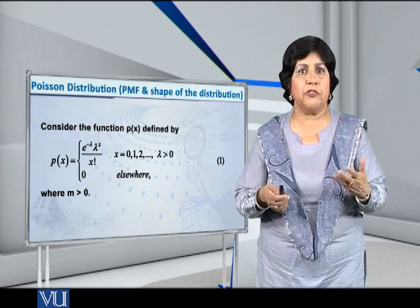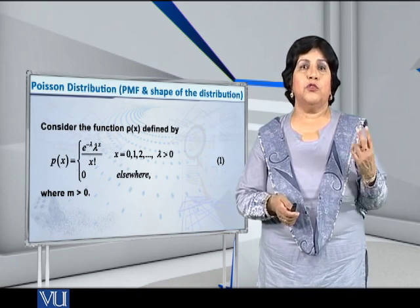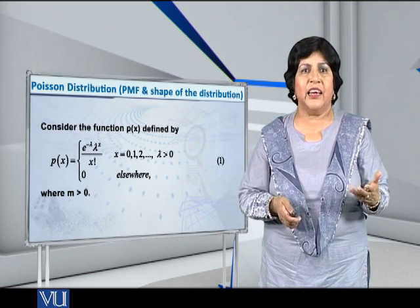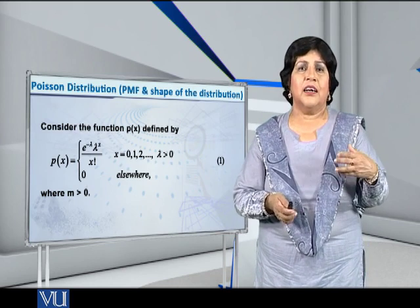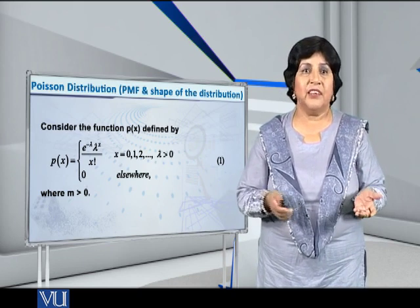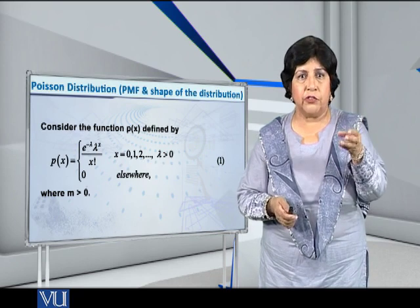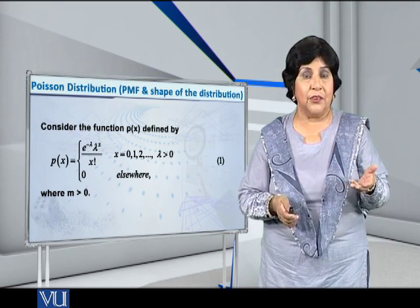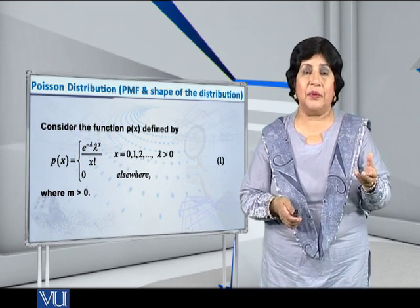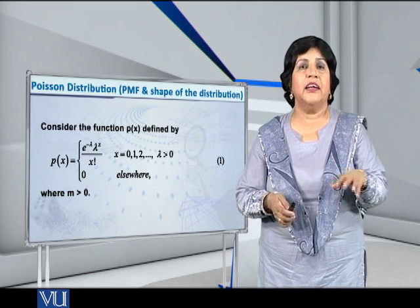About this PMF, we first want to check whether it is truly a probability mass function. For that, the two properties that have to be fulfilled — let us check them. As you know, for any discrete distribution the probabilities have to be greater than or equal to zero; probability can never be negative. So first we check: is P(x), given by this formula, greater than or equal to zero?